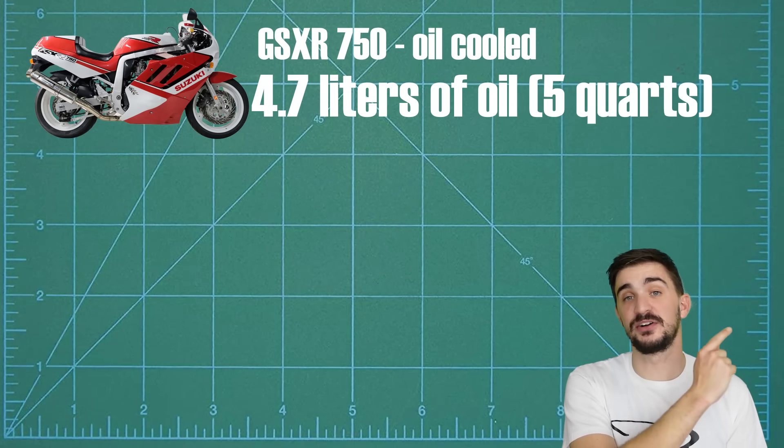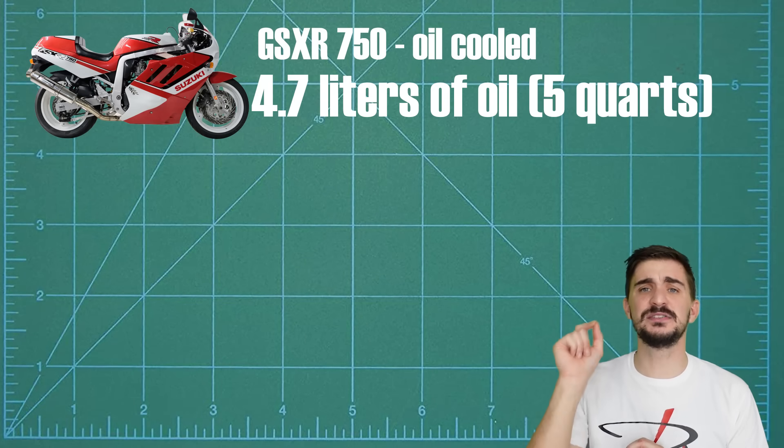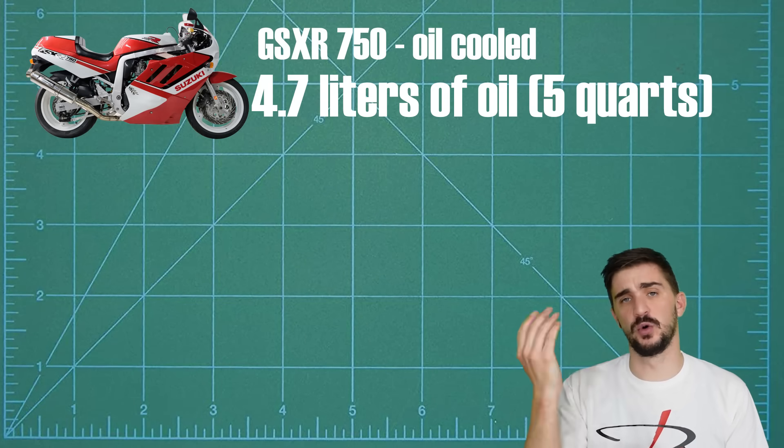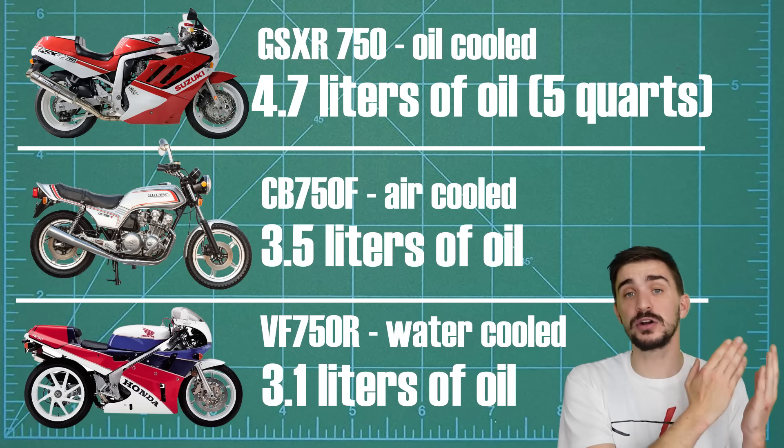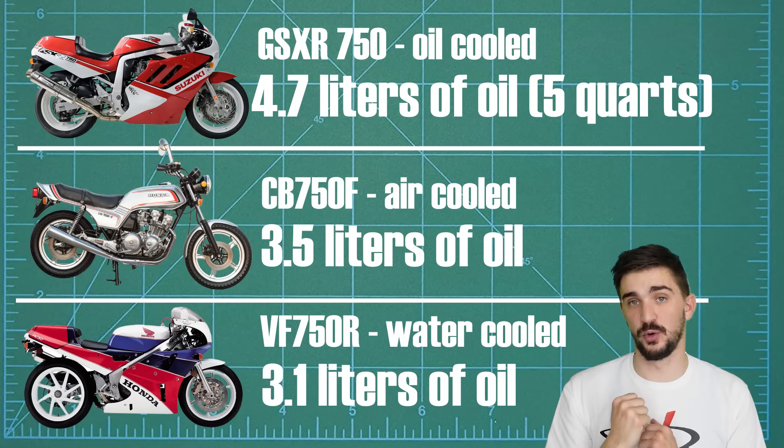For example, a GSX-R 750 from the late 80s needs 4.7 liters of oil for an oil change. In comparison to this, an air-cooled only or a water-cooled 750cc motorcycle carries noticeably less oil.